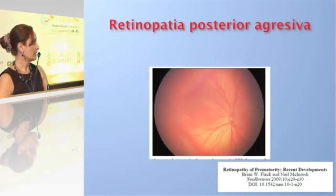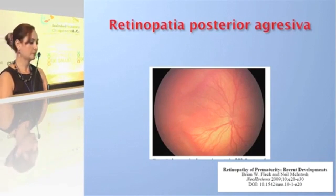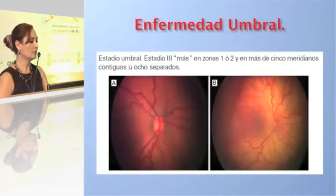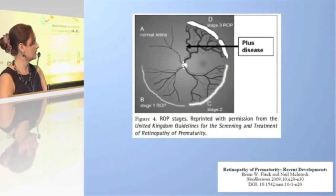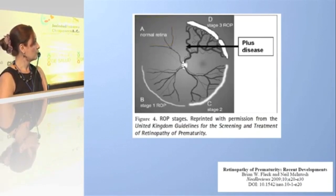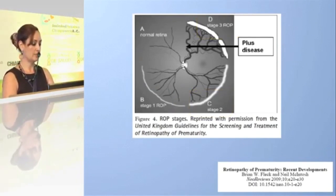Aggressive posterior retinopathy shows both vascular and avascular zones of the retina sharply demarcated. Threshold disease represents stage 3+ in zones 1 and 2 in more than five contiguous meridians or eight separated meridians — these require emergent treatment. In summary: stage 1 shows a faint demarcation line, stage 2 shows ridge formation, and stage 3 onward shows vessel tortuosity that can progress to total retinal detachment.